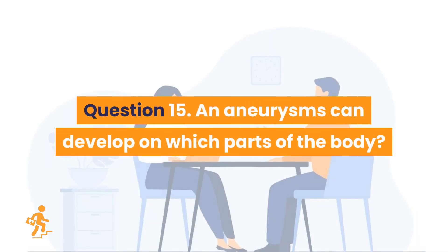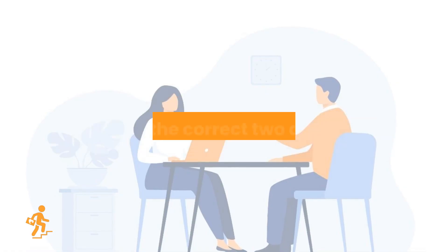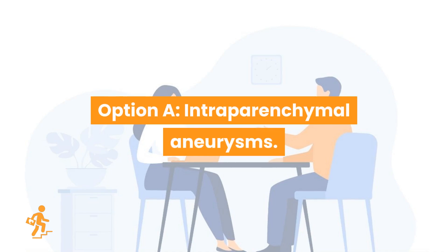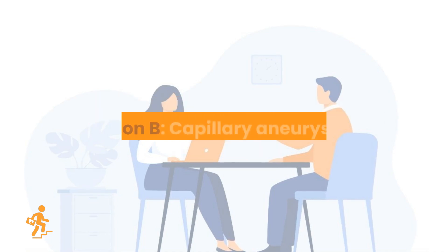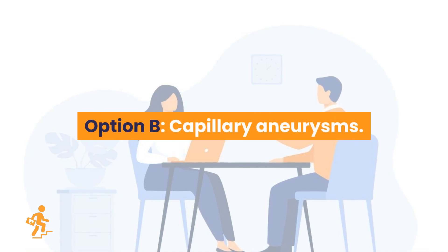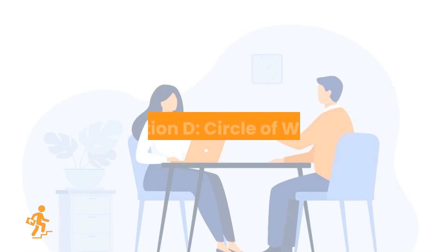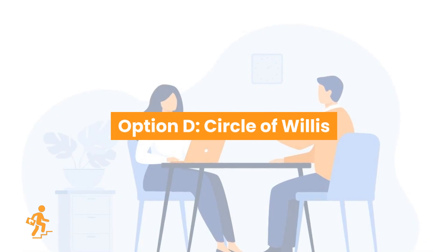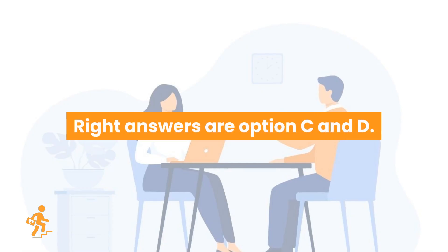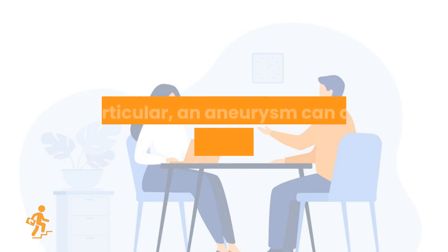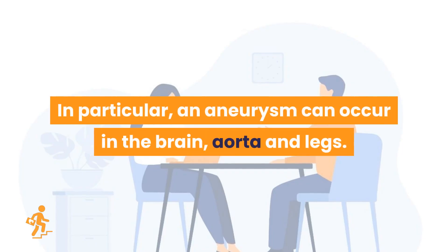Question 15. Aneurysms can develop on which parts of the body? Choose the correct two answers. Option A: Interparenchymal aneurysms. Option B: Capillary aneurysms. Option C: Abdominal aorta. Option D: Circle of Willis. Right answers are Option C and D: abdominal aorta and circle of Willis. In particular, an aneurysm can occur in the brain, aorta, and legs.